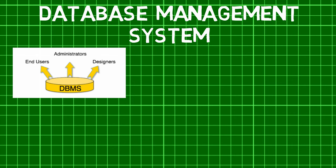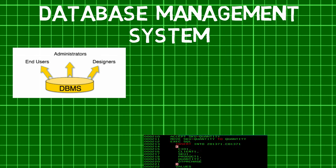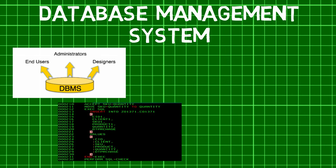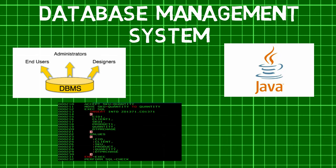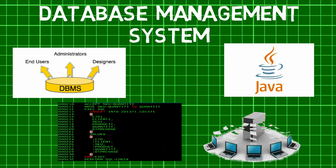The people who interact with the DBMS are called users. They are of four basic types. First are application programmers and, as the name suggests, they are the ones who write application programs that use the database. They generally code using COBOL or Java.